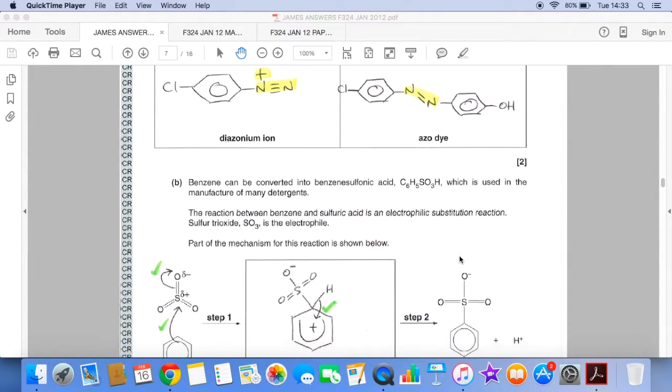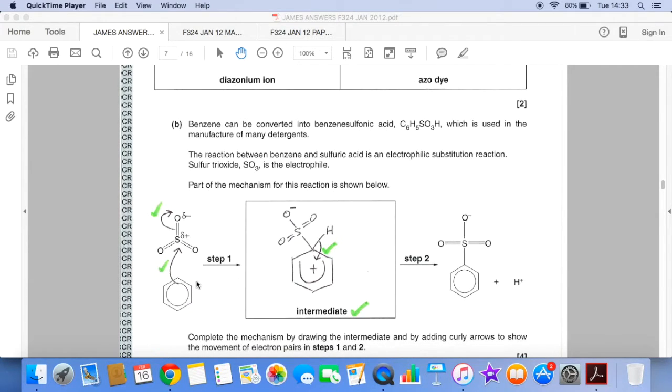The mechanism now. So just as it is with the nitration mechanism or chlorination, curly arrow from the pi electron cloud, the circle within the hexagon. Pi electron cloud pair of electrons come out to the slightly positive sulfur. That would repel a pair of electrons in one of the SO double bonds. So obviously that's where the dipole is,